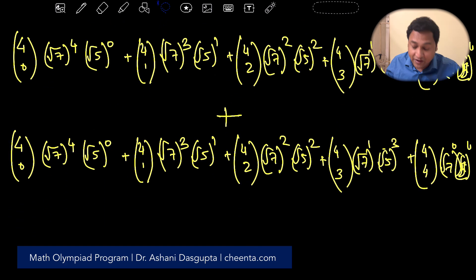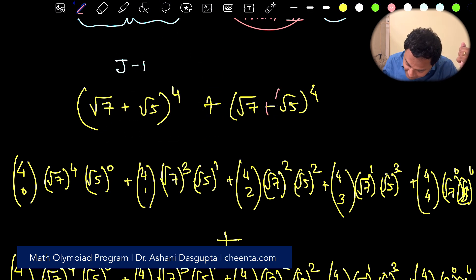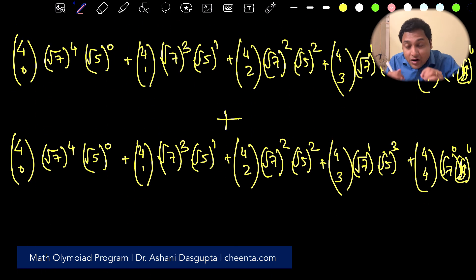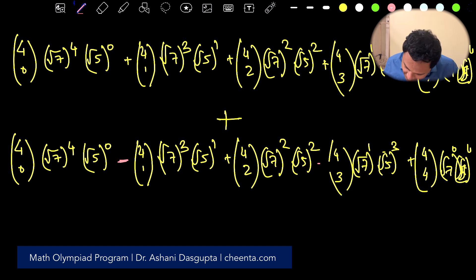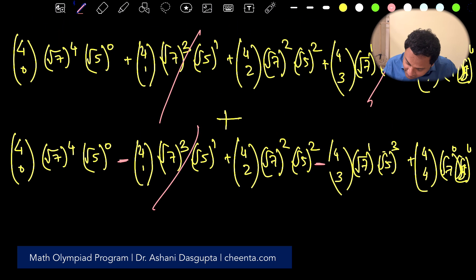Think of (√7 − √5)⁴ as having −√5. Whenever the power of (−√5) is odd, it gives a negative term. So the odd-power terms from the two expansions cancel each other out, and we are left only with the even-power terms.